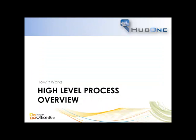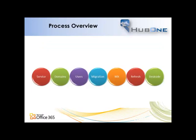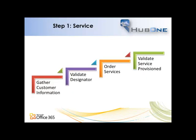Let's work through the process so you understand it. The process works on a number of steps: we establish the service, set up domains, set up users, migrate the data, move the MX record, refresh the final migration, and configure the desktop. For the service, first of all we gather the prerequisite customer information, validate that their designator for Office 365 is correct, and order the services. A bunch of workflows run to ensure that the service has been provisioned, because different partners have different SLA times on delivering the service.